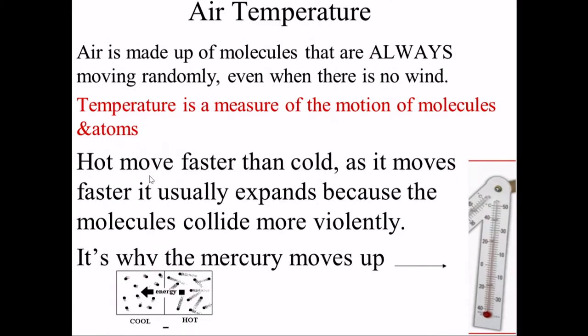Temperature is a measure of the motion of molecules in atoms of any particular object. You might also see it called kinetic energy of an object because the atoms are moving. When a thermometer is placed in a warm cup of water or warm air, the atoms inside the thermometer heat up, expand, and change the markings on the side. When it gets colder, the atoms move slower, they contract, and the markings will fall. That's how a mercury or alcohol-based thermometer actually works.